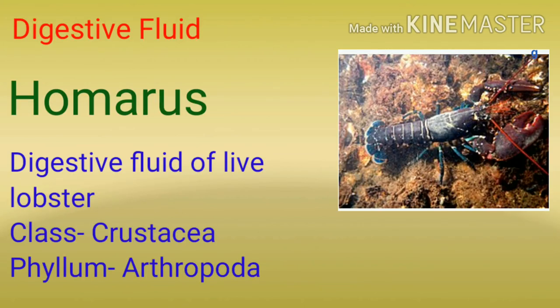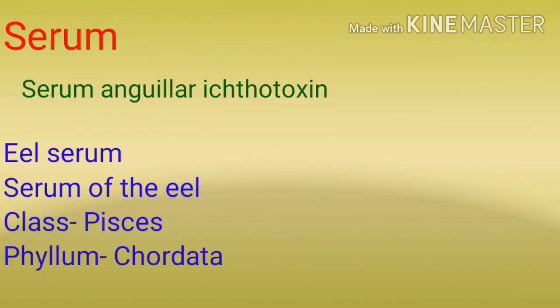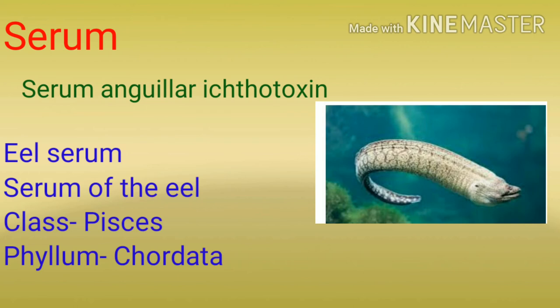Digestive fluid से बनने वाली medicine में नाम आता है Homarus का, which is prepared from digestive fluid of live lobster — जीवित lobster को use करके medicine बनाते हैं — class Crustacea, phylum Arthropoda। Serum से बनने वाली medicine है Serum anguillae ectotoxin, which is eel serum or serum of the eel, class Pisces, phylum Chordata।